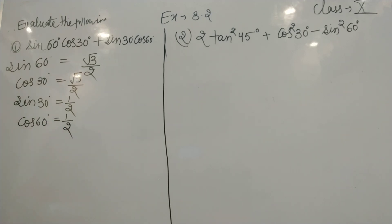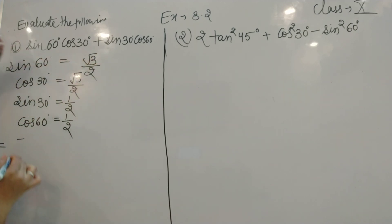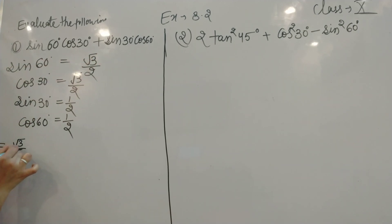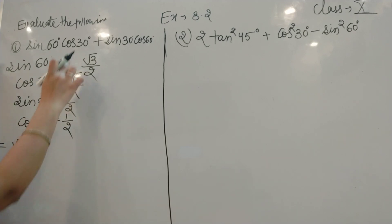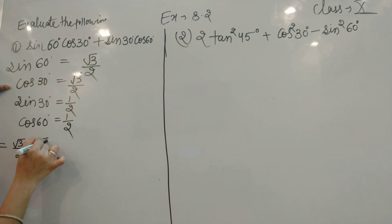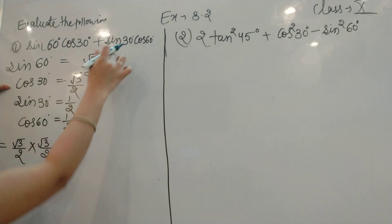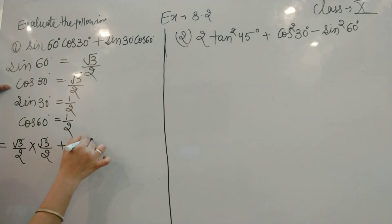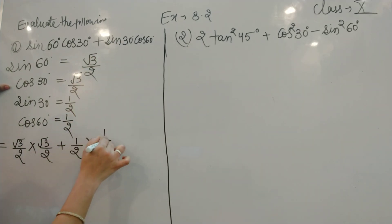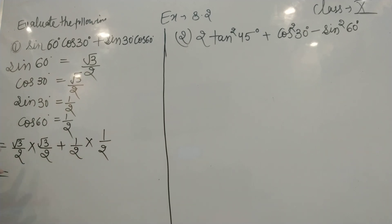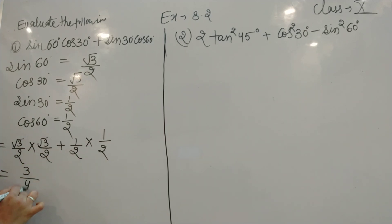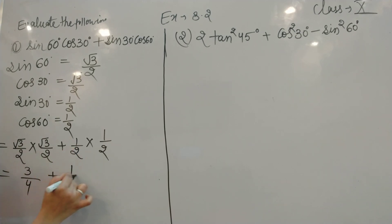Now we will put all four values in. sin 60° = √3/2 multiplied by cos 30° = √3/2, plus sin 30° = 1/2 multiplied by cos 60° = 1/2. So √3 × √3 = 3, and 2 × 2 = 4, giving 3/4. The second term: 1/2 × 1/2 = 1/4.